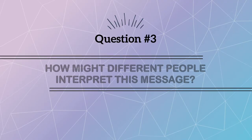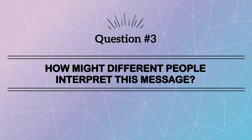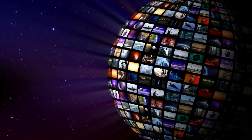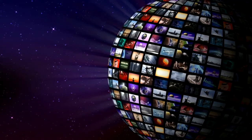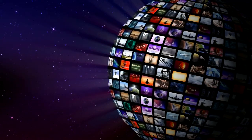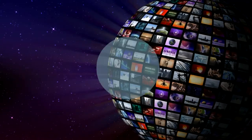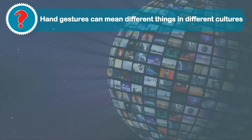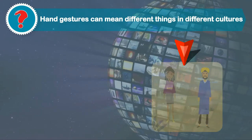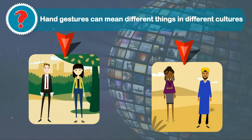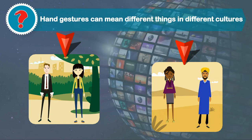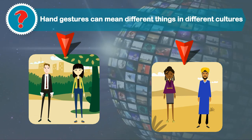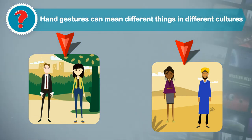Question 3: How might different people interpret this message? Here, we recognize that we are more than just passive receivers of information. By asking this question, we attempt to step outside our own perspective to explore multiple viewpoints, building respect for others in the process.